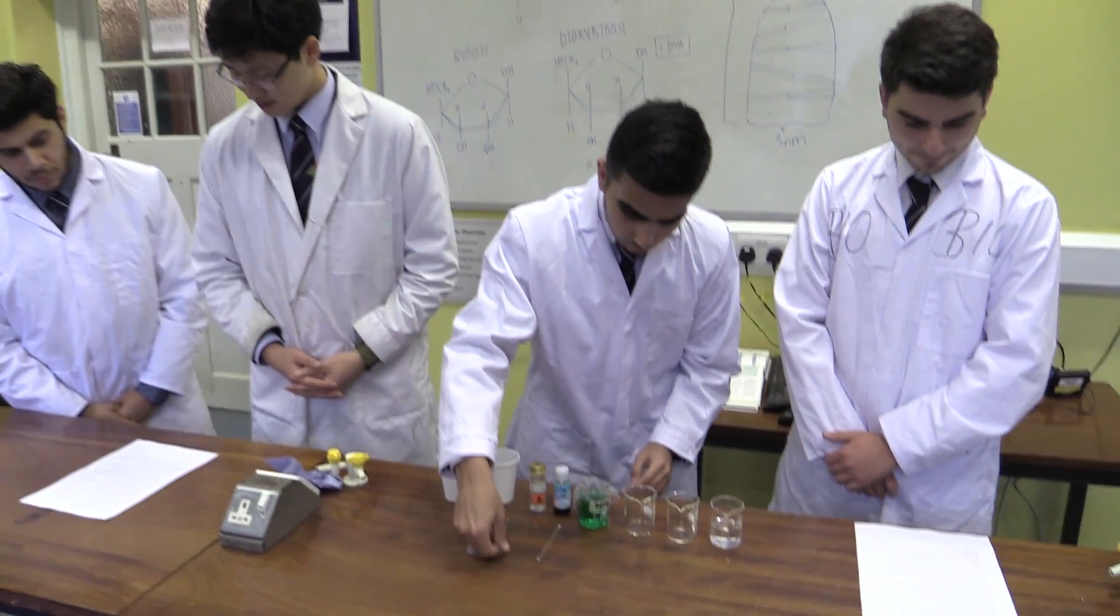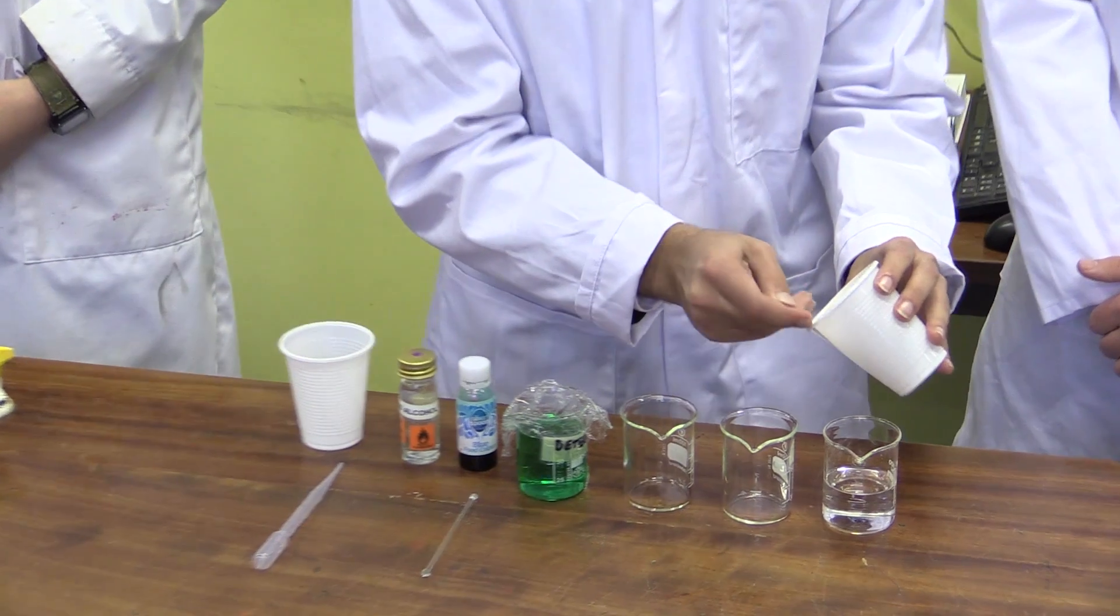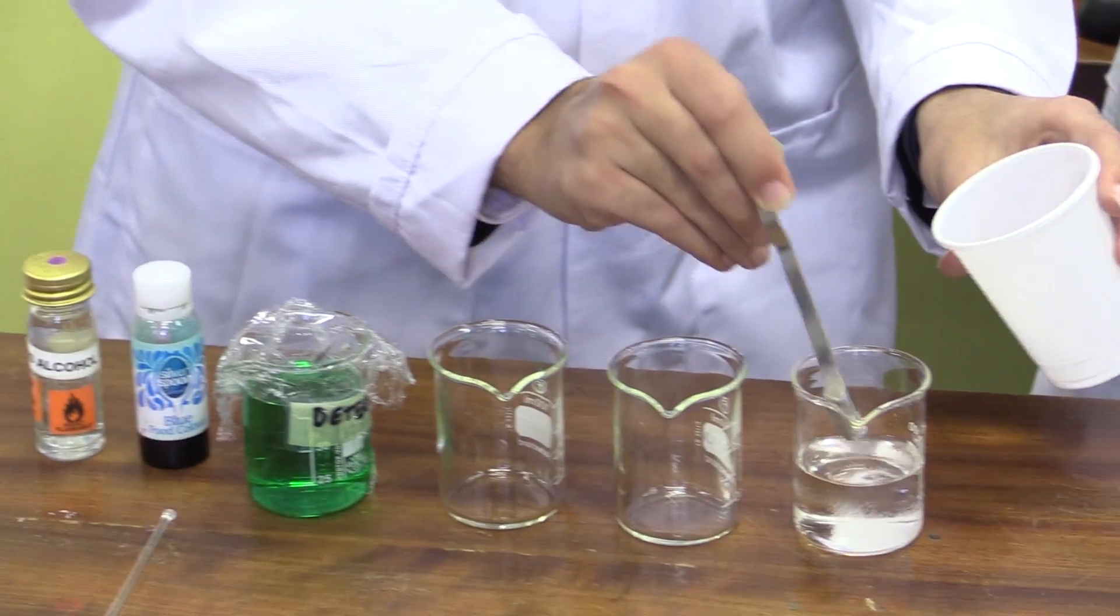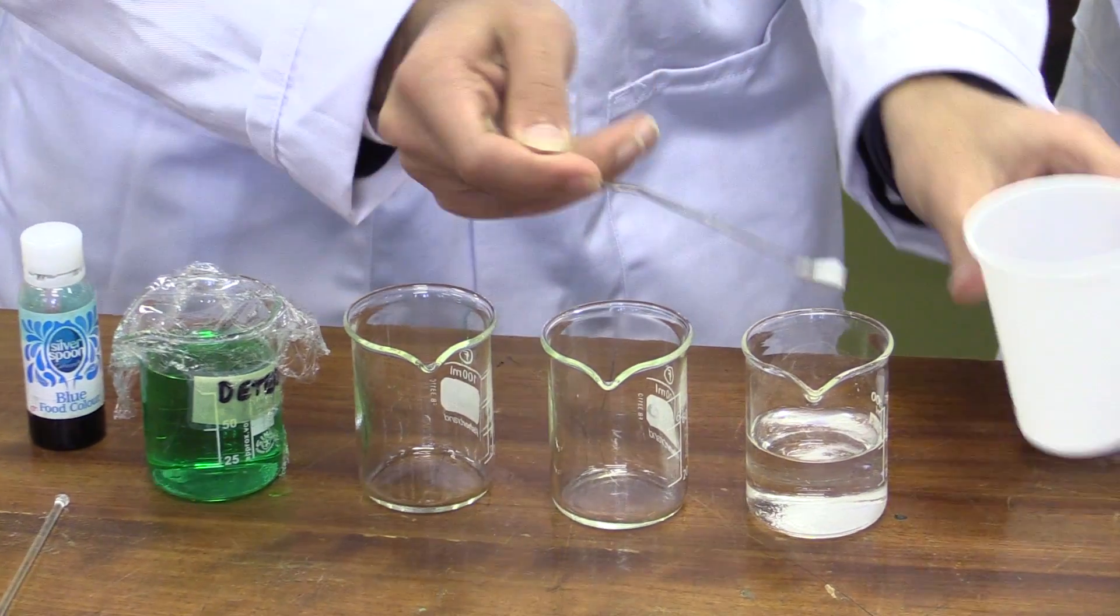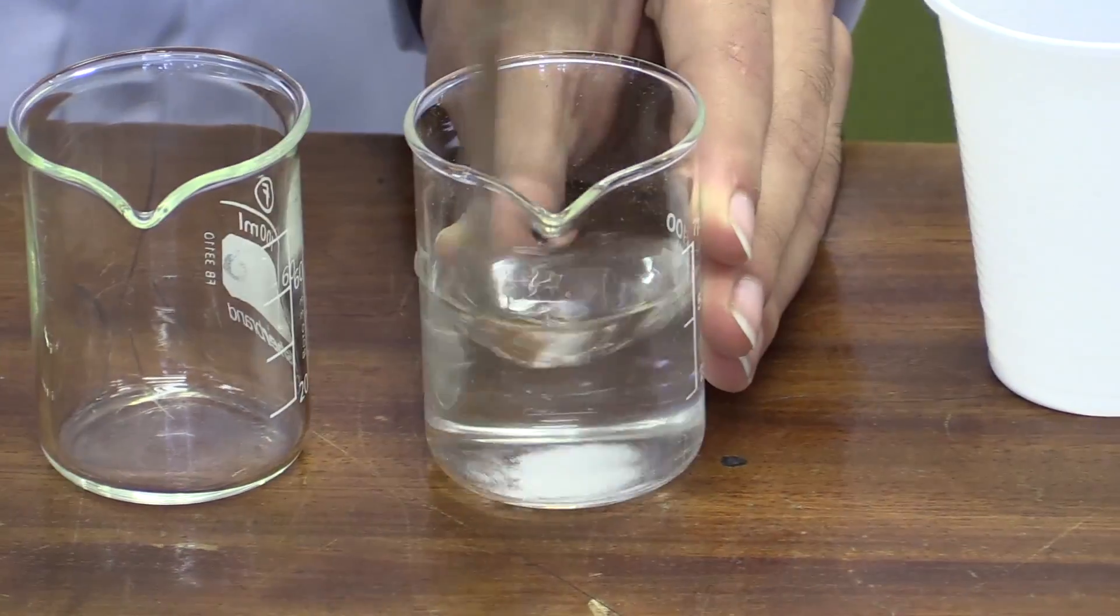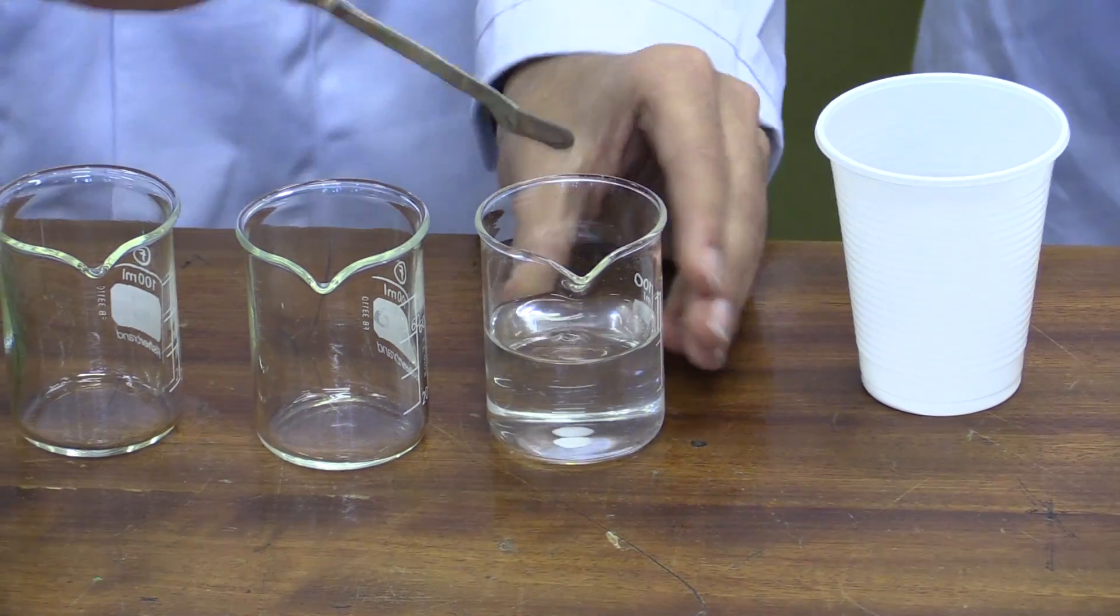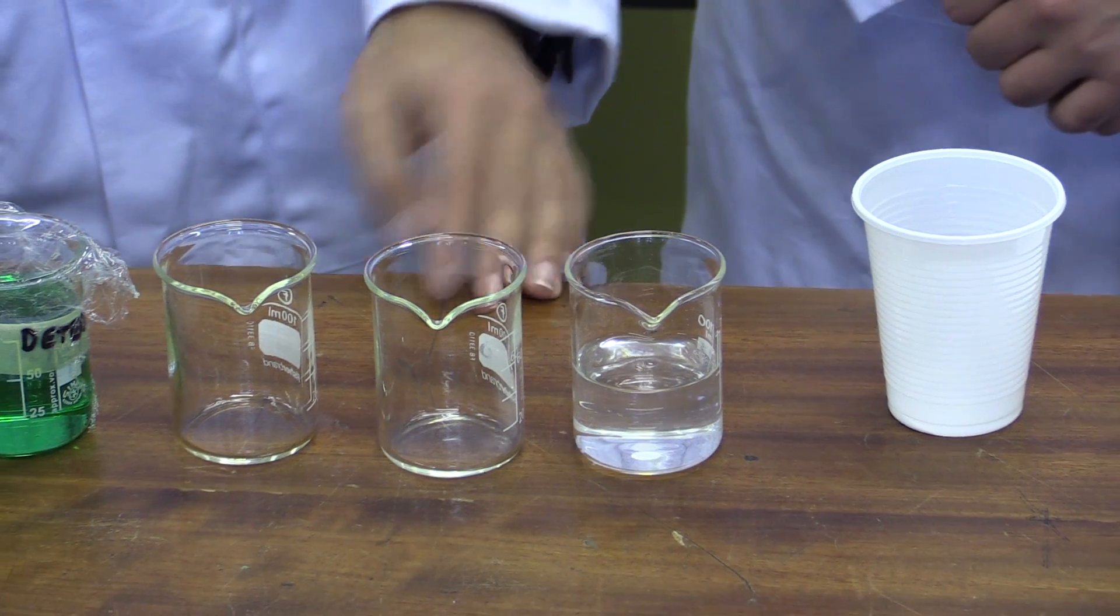So first, all you need to do is get 1 tablespoon of salt and dissolve it in 50 cm³ of water. Then we will transfer 3 tablespoons of water to another beaker.